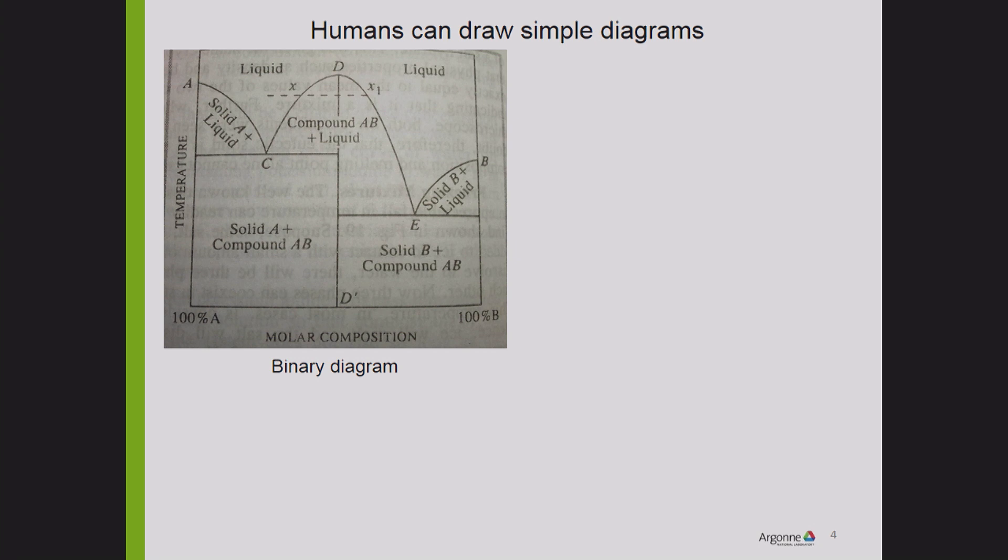This is a binary diagram. I'm not going to invite you to revise all your thermodynamics, but if you remember learning about phase diagrams, if you have two components A and B, you'll have liquid in the upper part at higher temperature. This is temperature, this is composition. You may have an intermediate compound, like 50-50%, like this one, D. And then there are combinations of the neighboring phases, liquid and solid B, or liquid and solid A, and so forth.